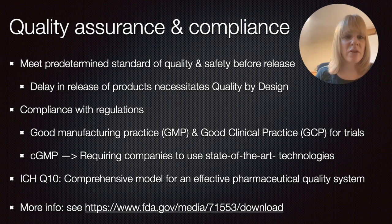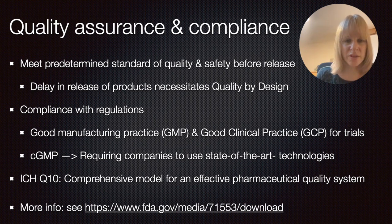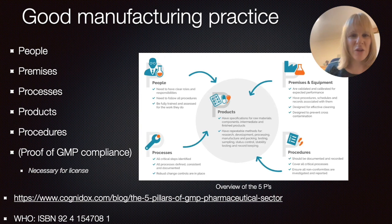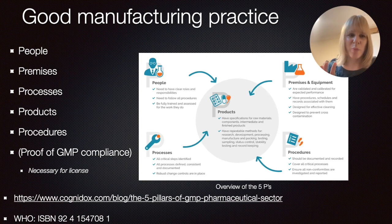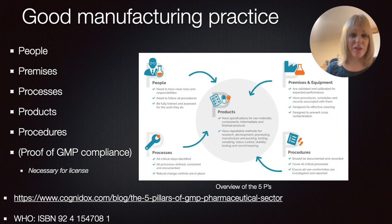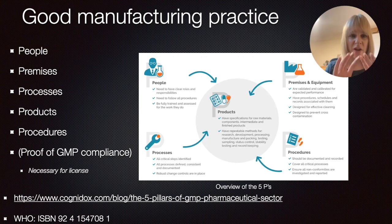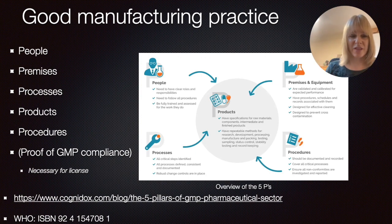There was a comprehensive model put together that looked at an effective pharmaceutical quality system. Let's look at the five — or sometimes six — P's of good manufacturing practice. The final P is actually the proof that you comply with GMP, which is necessary to get your license. Generally, the five P's are: products, which are central, then people, premises, processes, and procedures — sometimes also called paperwork.